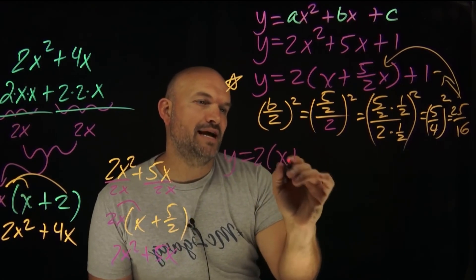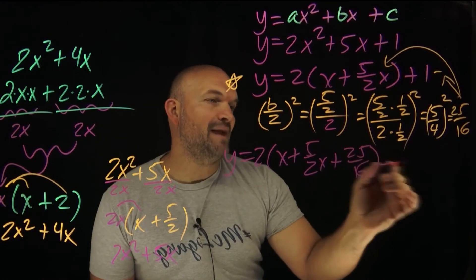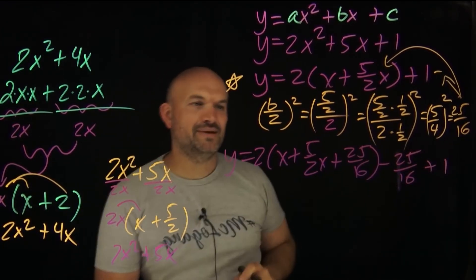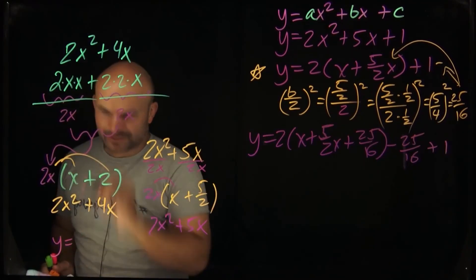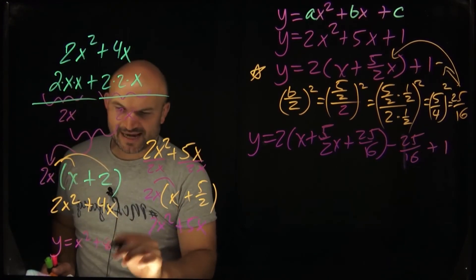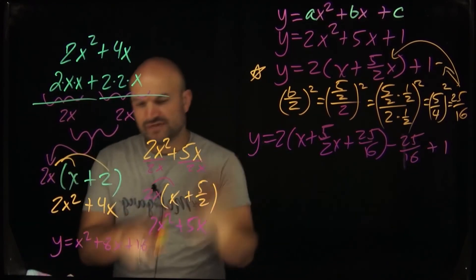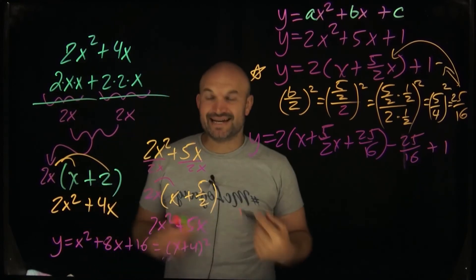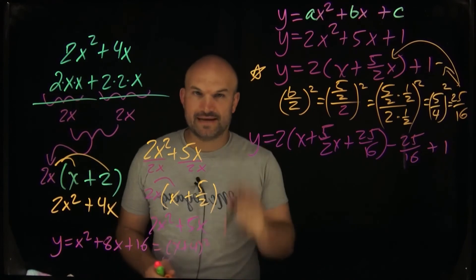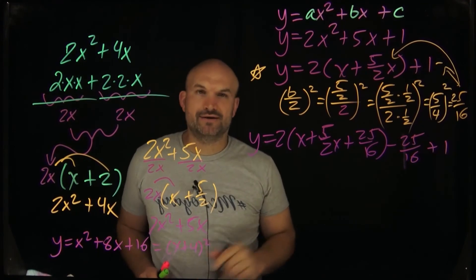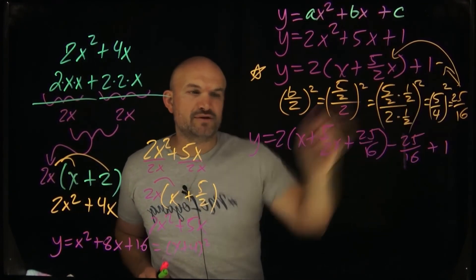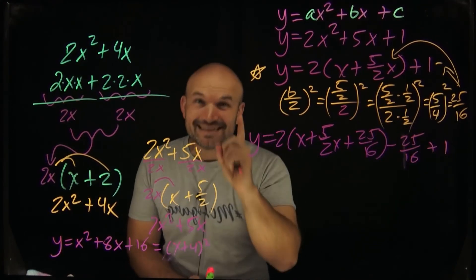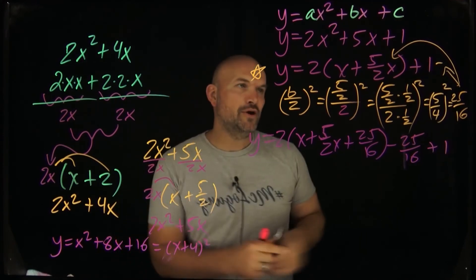So we write: y = 2(x squared + 5/2 x + 25/16 − 25/16) + 1. Don't forget the 1 — students always forget it. Now to factor the perfect square trinomial, remember the rule: whatever b/2 is, that goes into your binomial squared. Since b/2 was 5/4, the perfect square factors as (x + 5/4) squared.